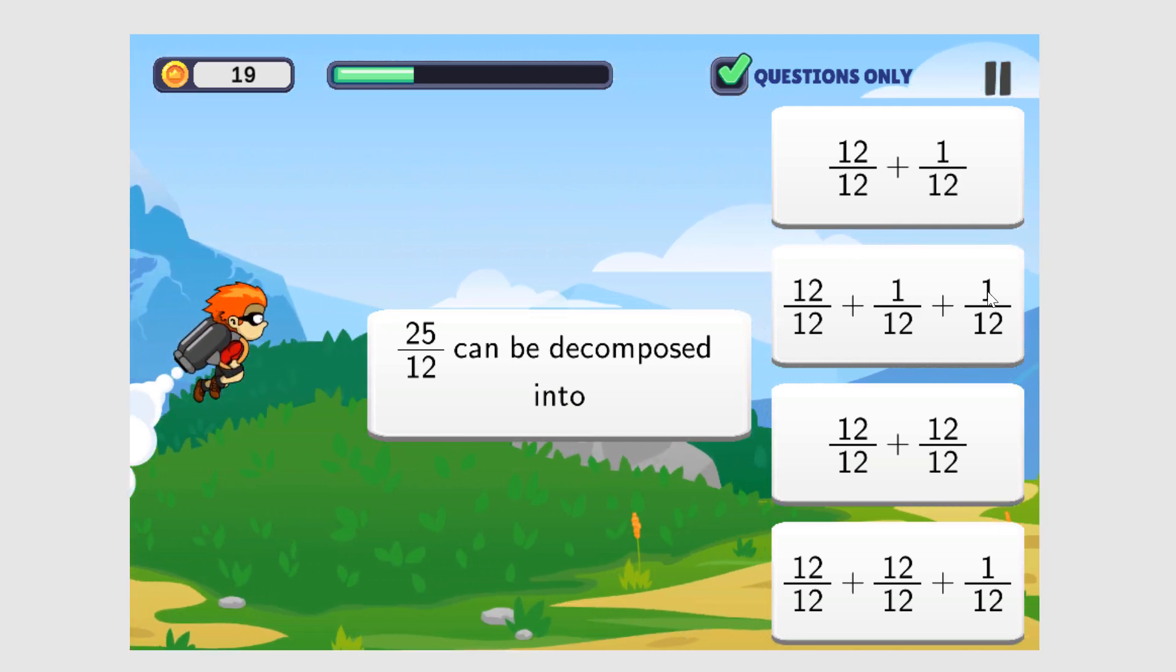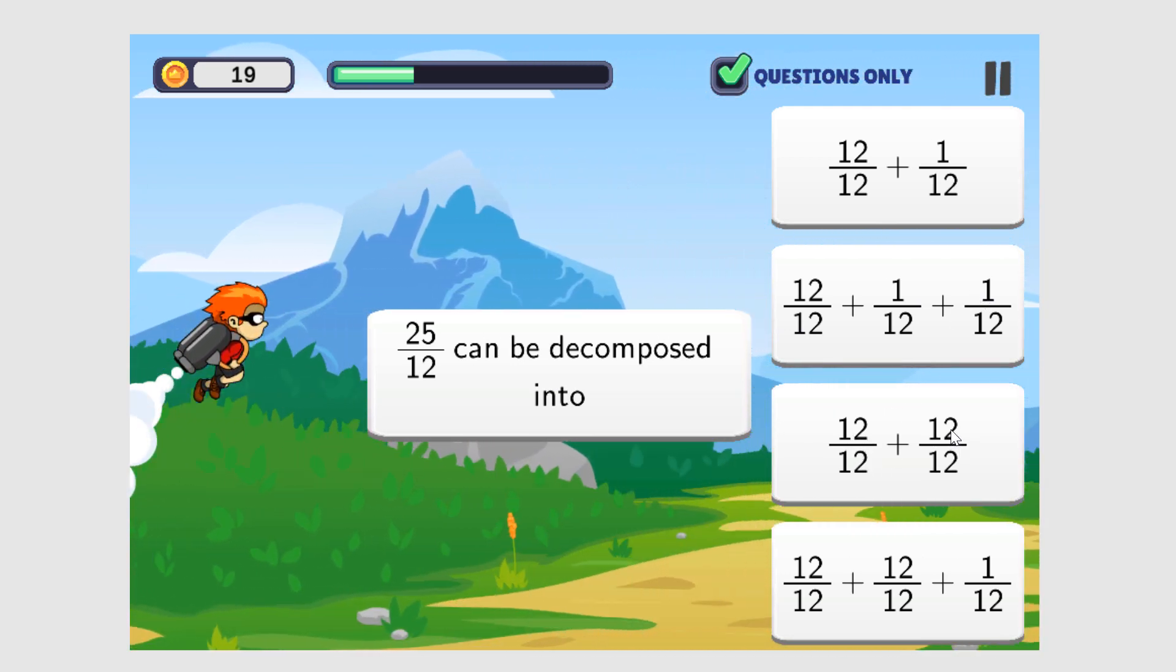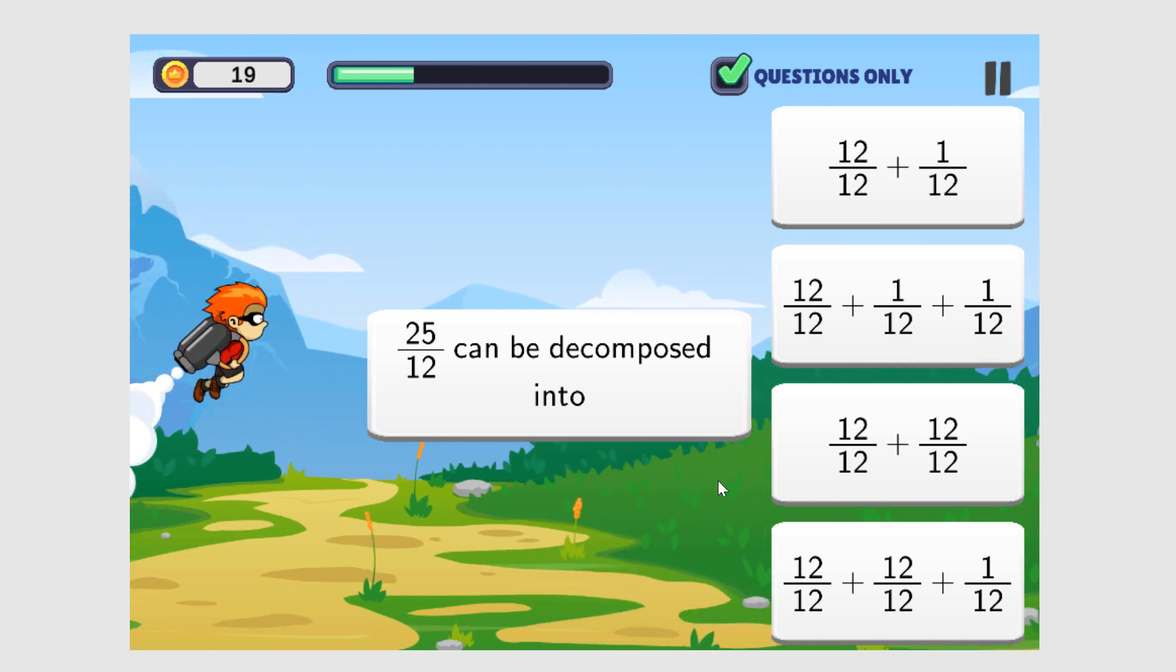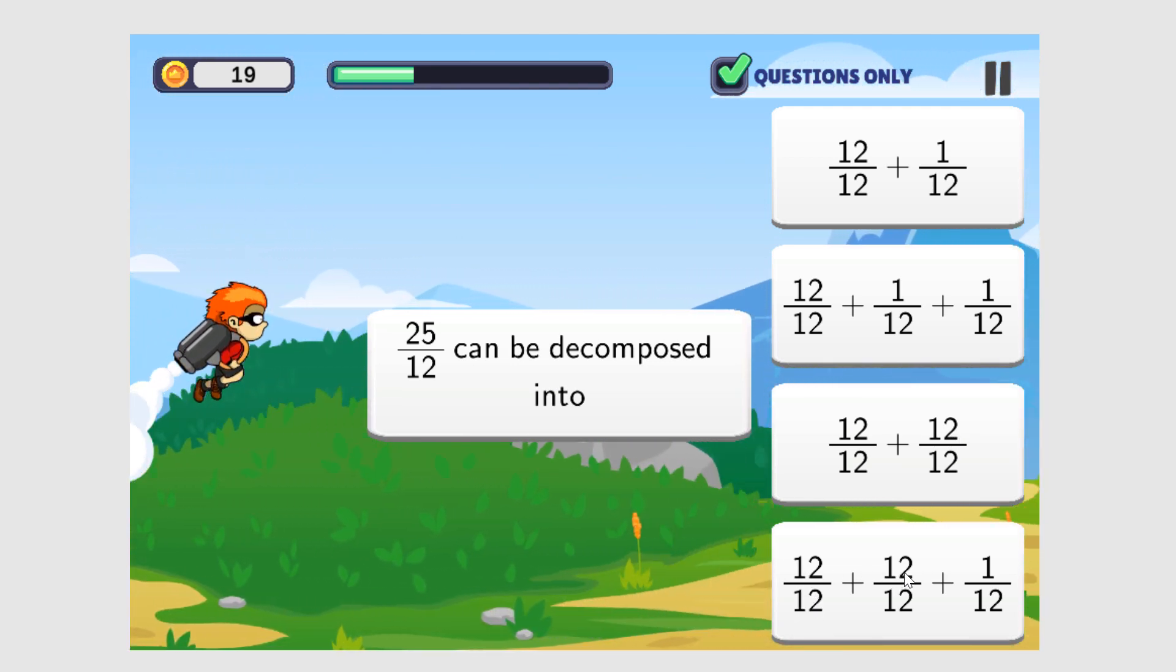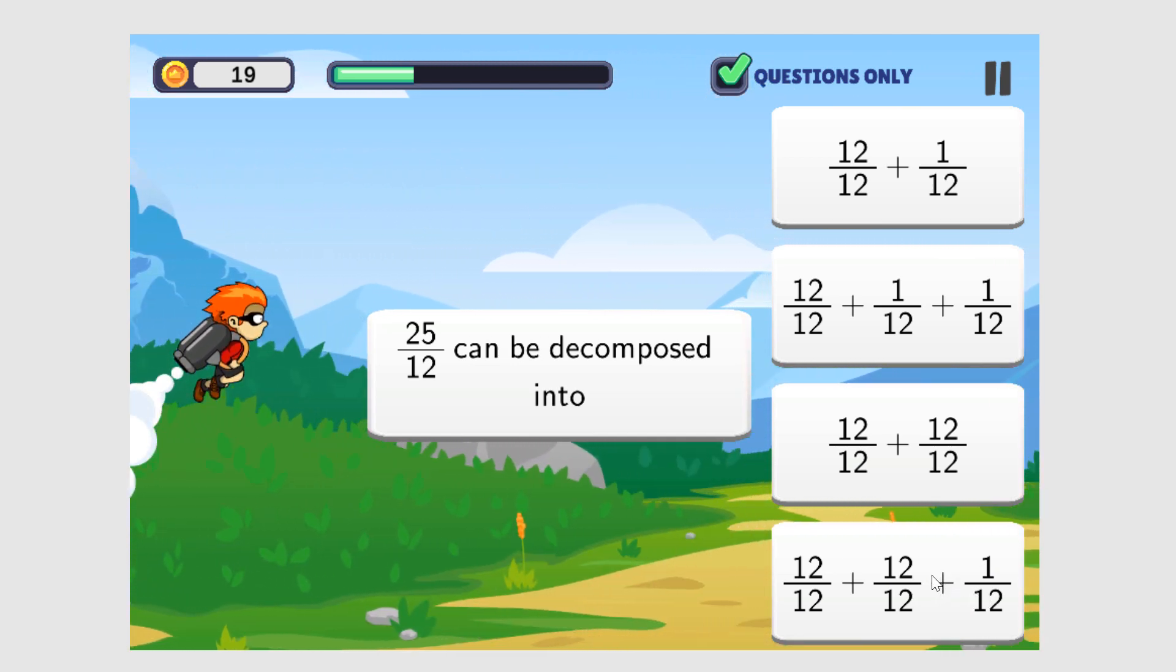Twelve plus one plus one is fourteen-twelfths. That's wrong. Twelve plus twelve is twenty-four-twelfths. That's wrong. Twelve plus twelve plus one is twenty-five and the denominator is twelve. So that's correct, twenty-five-twelfths.